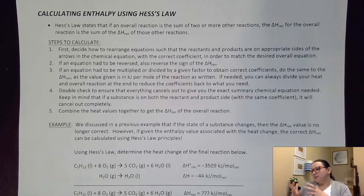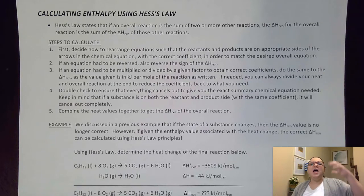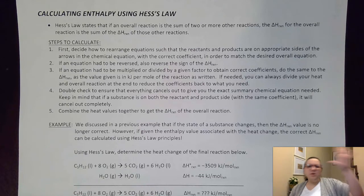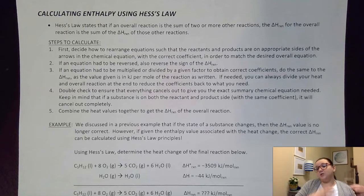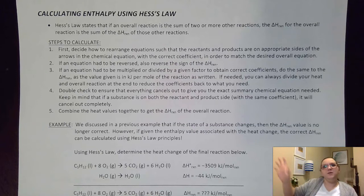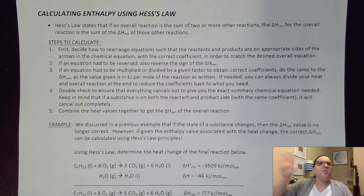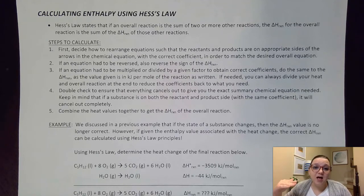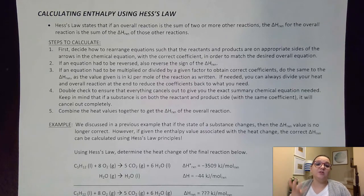What we're going to be given data-wise are some delta H values for some other reactions. What we're going to need to do with those other reactions is figure out how to rearrange them, manipulate them, and combine them together to get the reaction I'm looking for. All of those changes are going to need to be translated into changes in those delta H values. Once I get those changed correctly, I can simply add up those delta H values to get the delta H of the reaction I'm actually looking for.